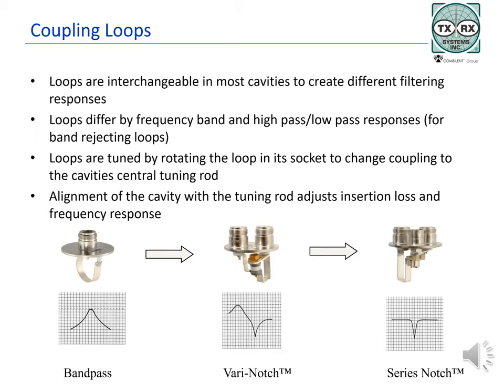Two loops are used in a bandpass cavity. The very notch loop has two connectors and a small tuning capacitor, which allows the loop to be tuned for a passband and adjacent notch. A single loop is used for each very notch cavity. The tuning capacitor is adjusted to change the notch frequency after the cavity is tuned using the cavity tuning rod. The series notch loop is used to block signals by being tuned for high impedance at the notch frequency. The loop has two connectors and a tuning capacitor, like the very notch loop, and allows the notch frequency to be adjusted in depth, while basic tuning is performed with the tuning rod assembly.